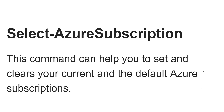Hello friends, welcome to the channel. Today in this video we are going to discuss a very important Azure PowerShell command: Select-AzureSubscription. This command can basically help you to set and clear your current or default Azure subscription. So if you have multiple subscriptions and want to make one default, or set a different current subscription, you can do that with this command. We will discuss the syntax, usage, and examples.